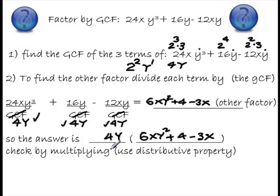So, the answer is, remember, 4y, which was my greatest common factor, that goes in front, and the other factor, the other polynomial factor, this time it's got three terms, because I started with three terms, is 6xy² plus 4 minus 3x. Again, check by multiplying out 4y times each one of those three terms, and see if you wind up with the original polynomial. Factoring by greatest common factor. Thank you.